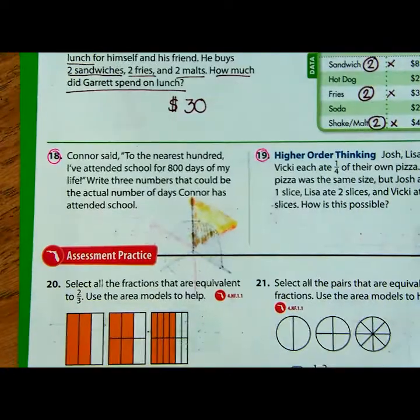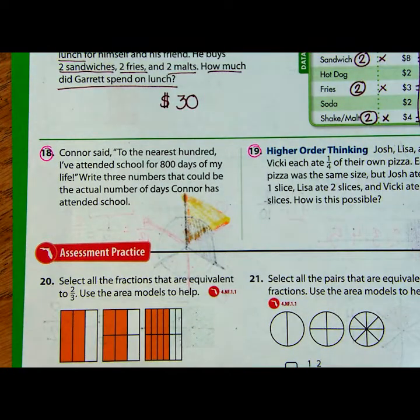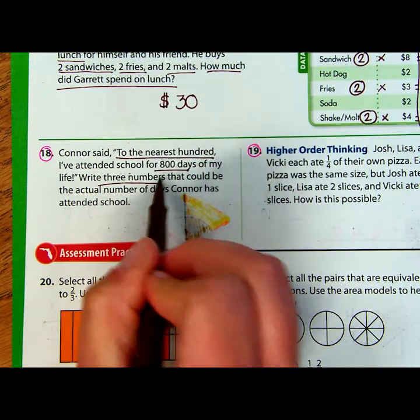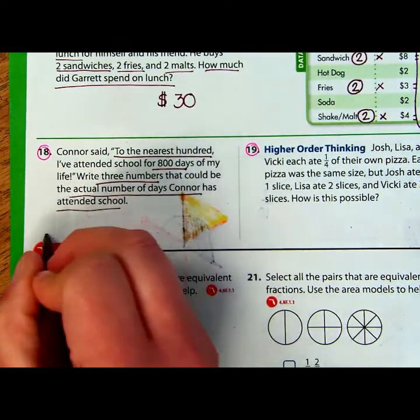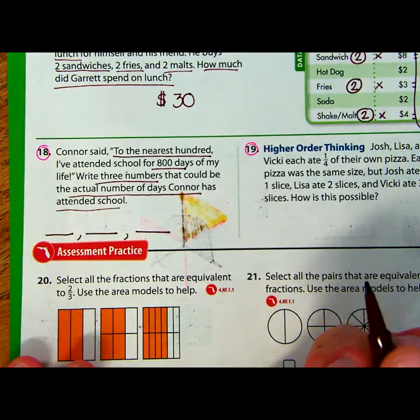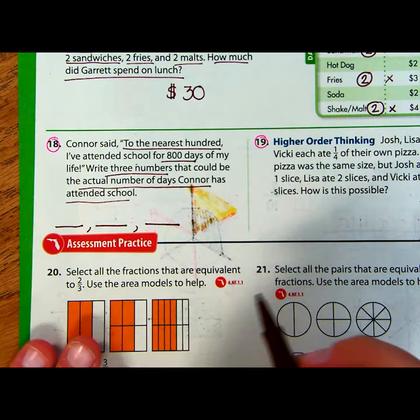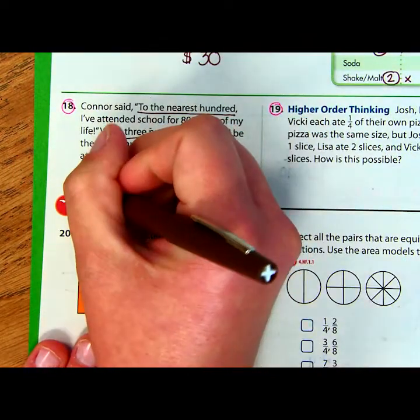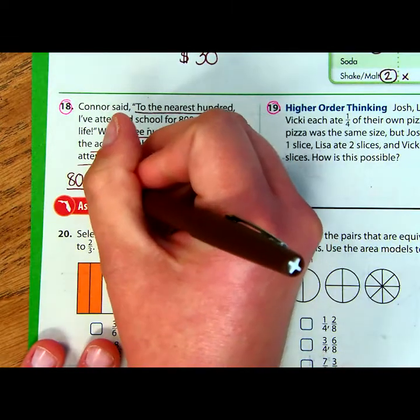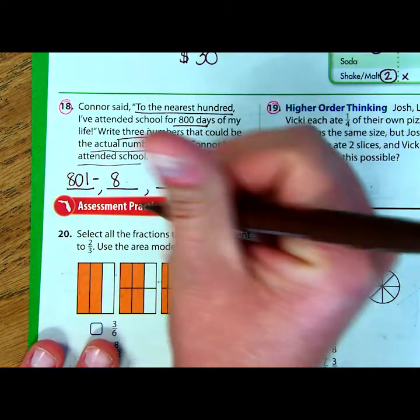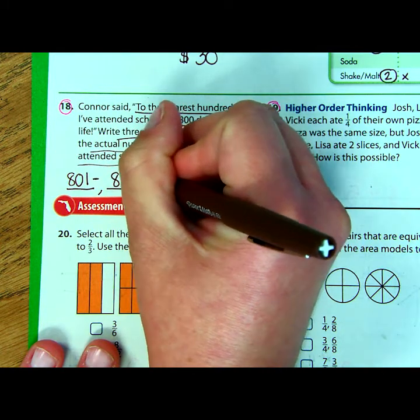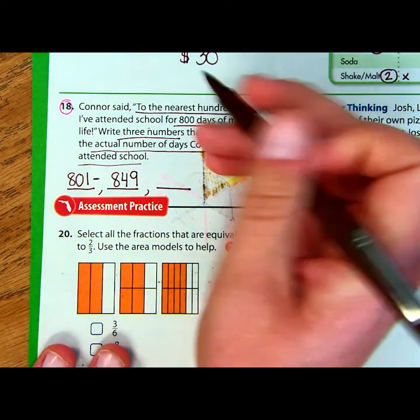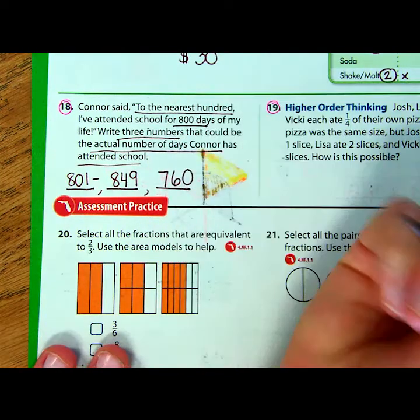Number eighteen. Connor said to the nearest hundred, so I guess we're going back to revisit rounding, I've attended school for eight hundred days of my life. Write three numbers. That could be the actual number of days Connor has attended school. So we want three numbers that when rounded to the nearest hundred could be eight hundred. So there's more than one answer, just like there's more than one answer to this question up here that could be correct. So we could say eight hundred and one. That would round down to eight hundred. It could be anywhere between eight hundred and one all the way up to, let's see, eight hundred forty-nine. Once you hit eight hundred fifty, it would round up to nine hundred. You could also go below, you could say like seven hundred and sixty. Right? These would all round to eight hundred.